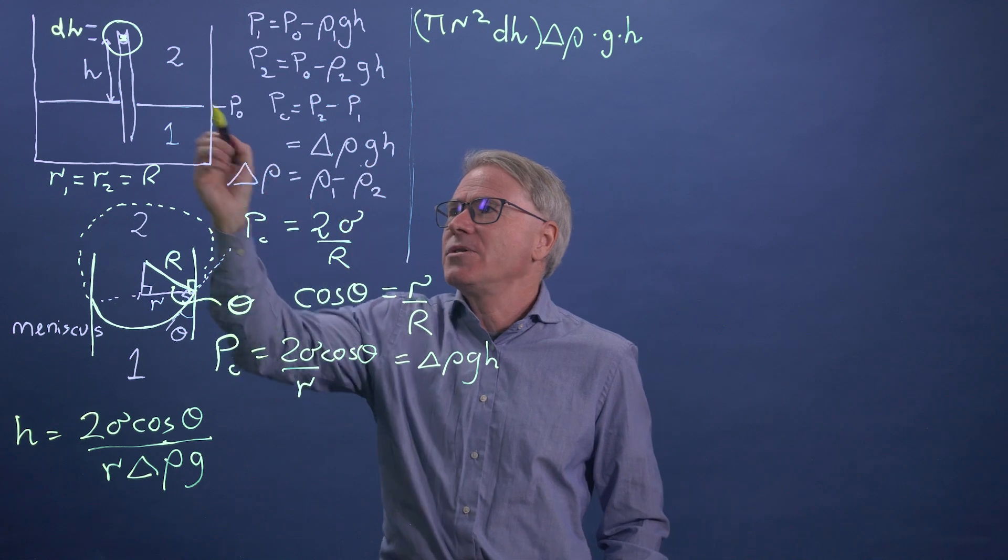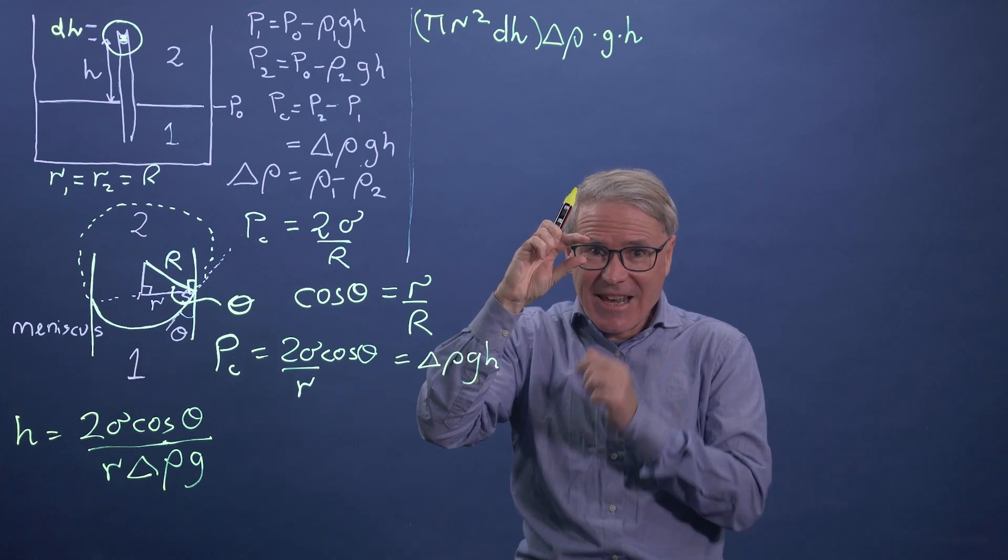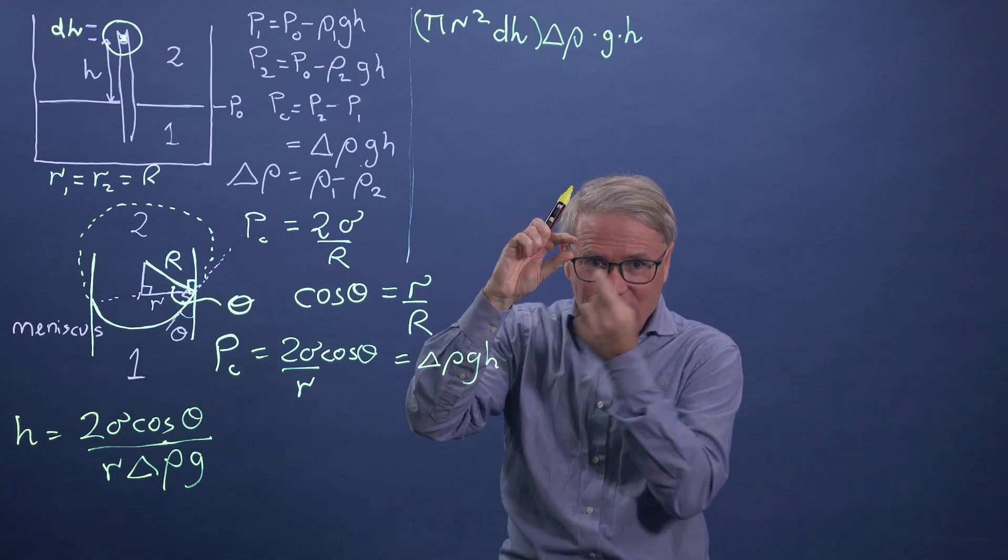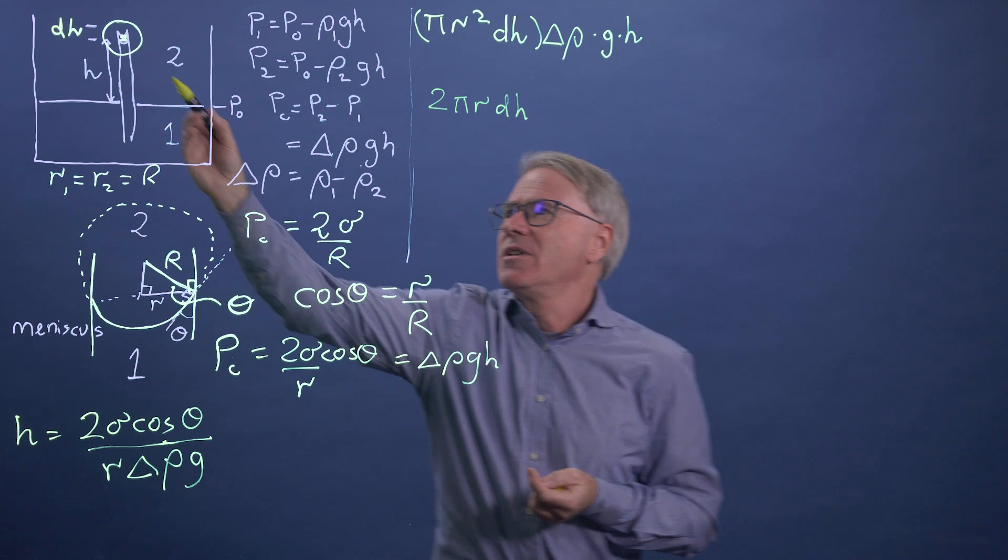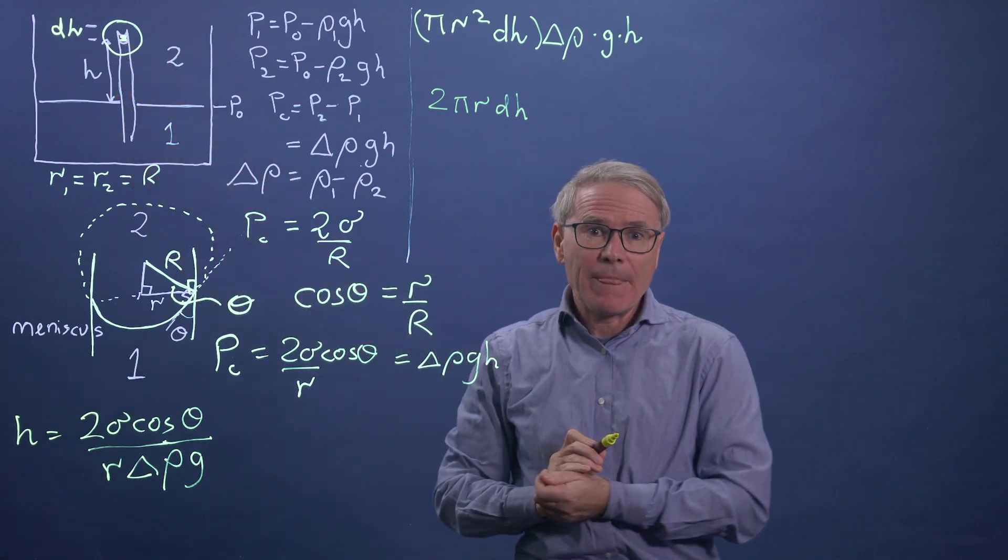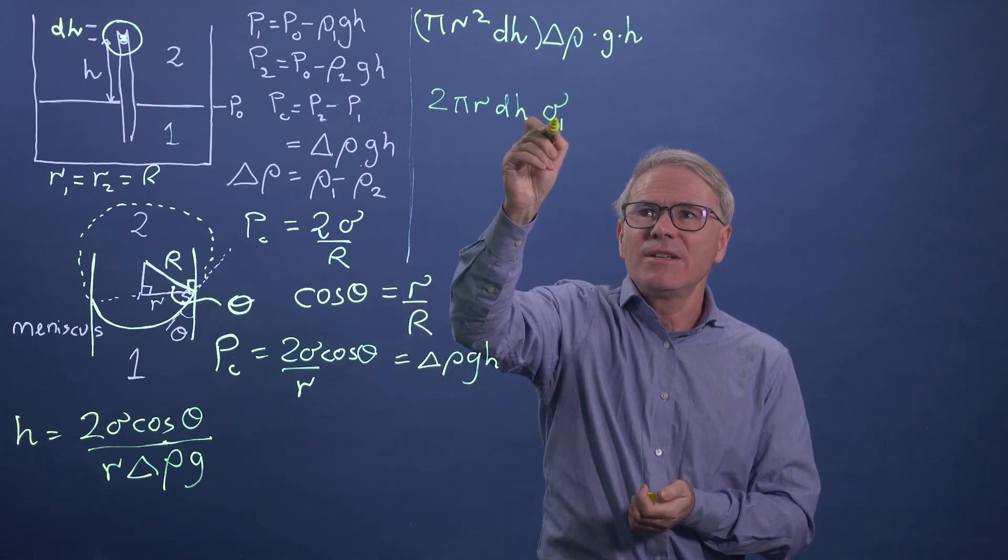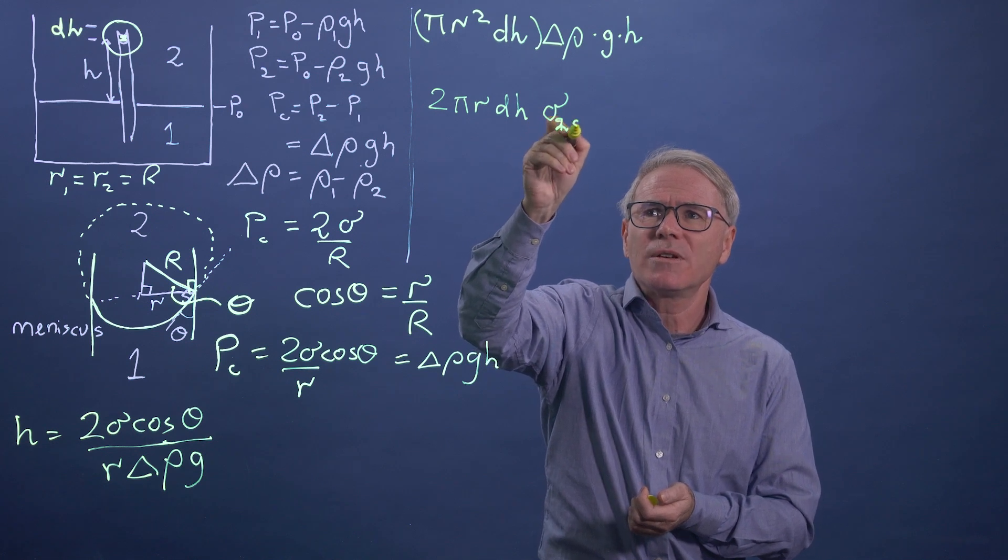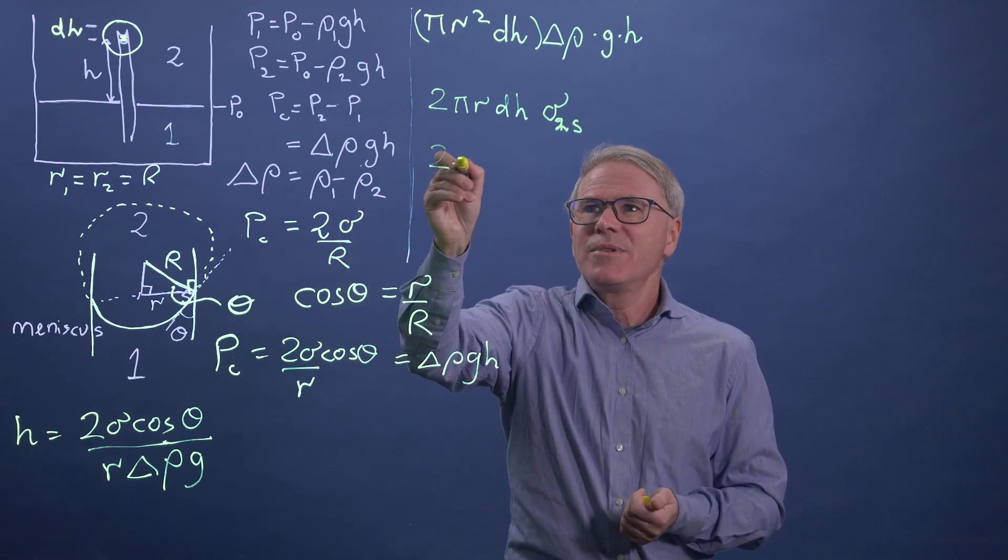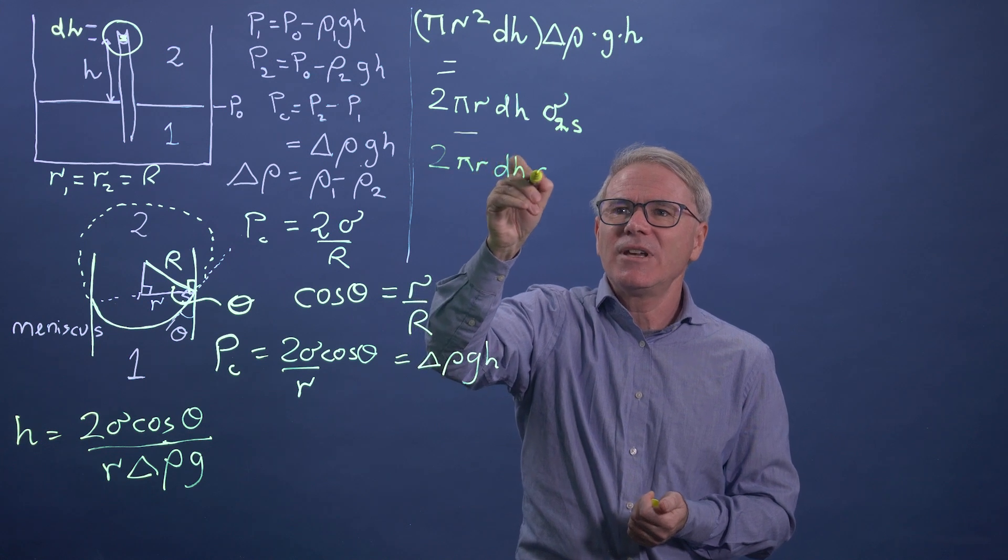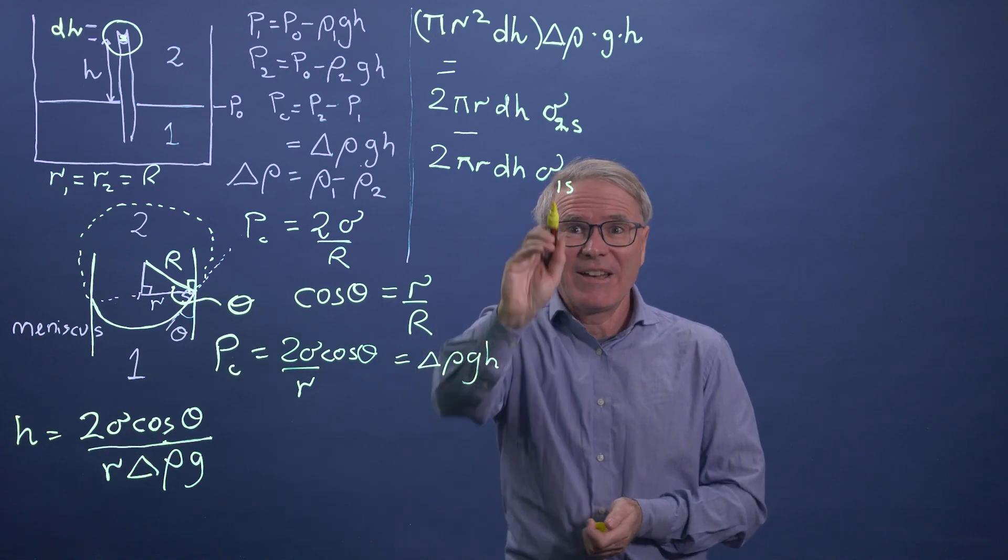Now let's think about what has happened. Originally we have a little collar of height dh and circumference two pi r. So two pi r dh, we can imagine the area of a little collar. And that's contacted by phase two. So that has an interfacial energy sigma times two times the surface. And then as the water moves up, we're going to find that the energy is lowered because the surface is covered by phase one.